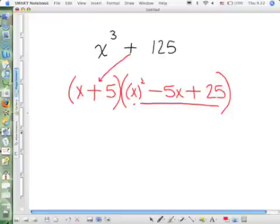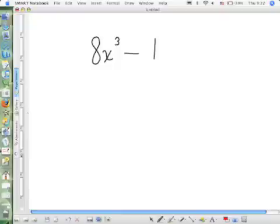We're going to keep going. You're going to start recognizing the pattern. Can I move? All right. These are perfect cubes. 8 is a perfect cube. x cubed is a perfect cube. And 1 is a perfect cube.